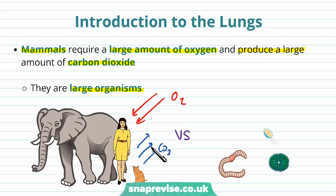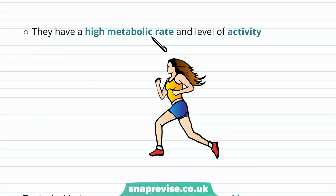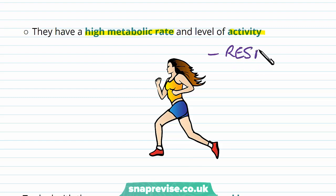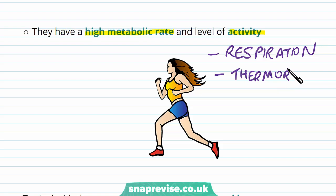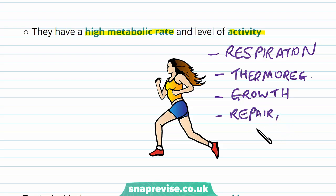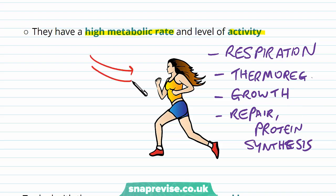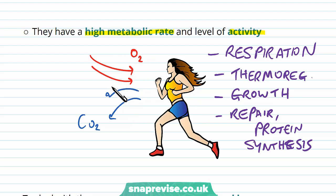Larger animals like mammals use lots of oxygen and produce lots of CO2, and therefore they need a gas exchange system, whereas smaller animals like worms or algae do not need one so much. Large mammals also have a high metabolic rate with lots of activity, including respiration to produce energy, thermoregulation, growth, repair, and protein synthesis.